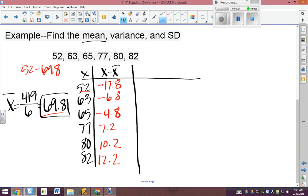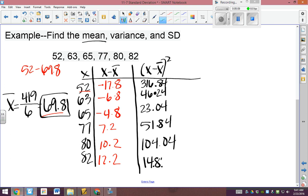All right, now that's not all we need to do. The next step is to then take those numbers we just got and square them. That's kind of a funky step. So the purpose of squaring it, if you square a negative, it's going to turn to a positive. So we're trying to get that positive value there. All right, so square the first one, 316.84. Then 46.24, 23.04, 51.84, 104.04, and 148.84.